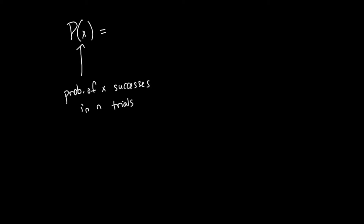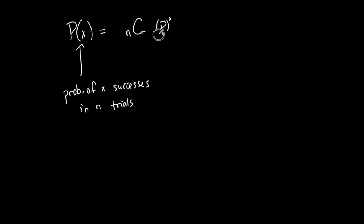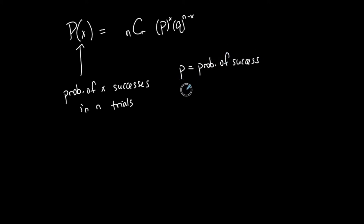P(x) is equal to nCr — combinations — times p to the x, times q to the n minus x, where small p represents the probability of success, q is the probability of failure, and q is the complement of p, so you can always find q by doing 1 minus p.